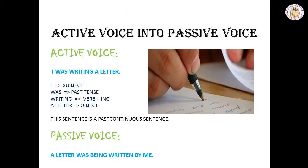Now look at: I was writing a letter. 'Was' means it is in past tense, and 'writing' is verb plus ing — so this is past continuous tense. When converting to passive, since it is past tense we use 'was', not 'is'. Since the active voice contains verb plus ing, again we use the word 'being' in passive voice. So: a letter was being written by me.